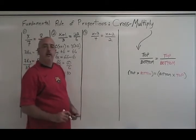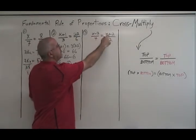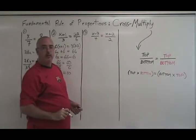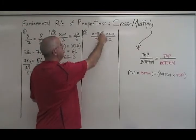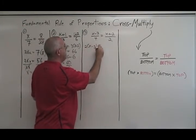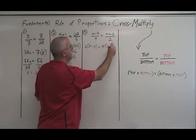Now we move on to a slightly more complicated looking proportion. It has two variables that are both part of small algebraic expressions. We can still solve with cross multiplication. Top times bottom means 2 times x minus 3 equals bottom times top means 4 times x plus 2.